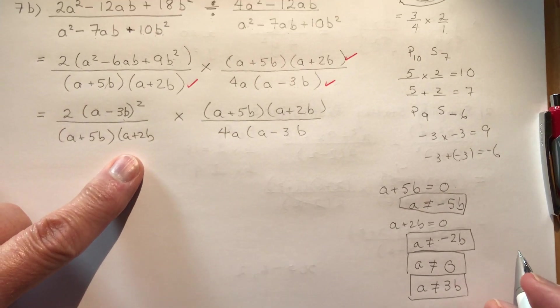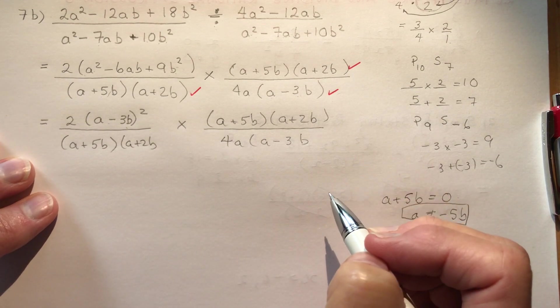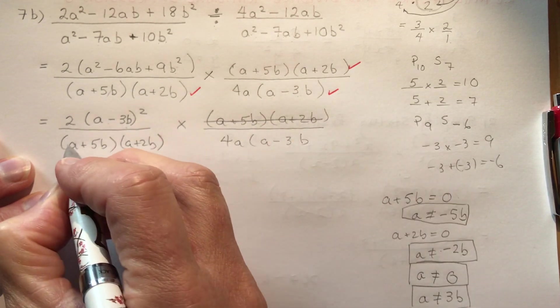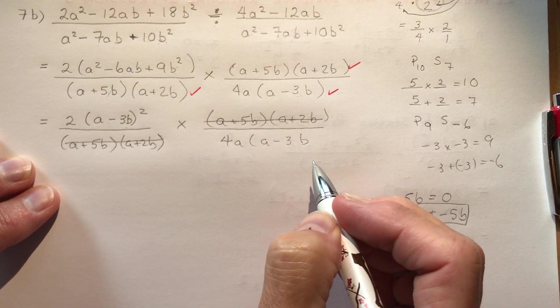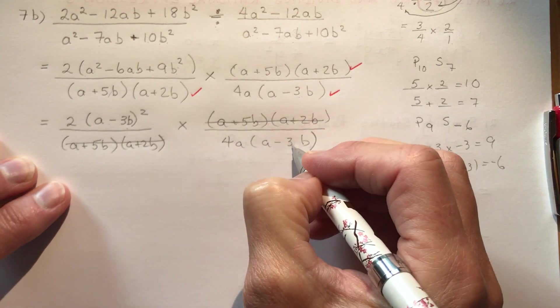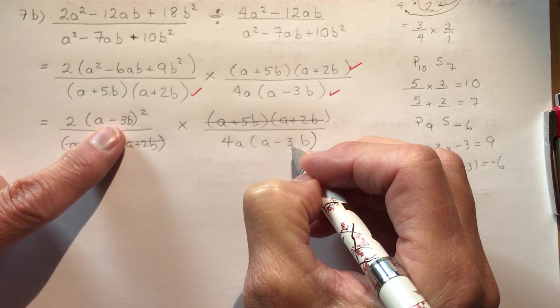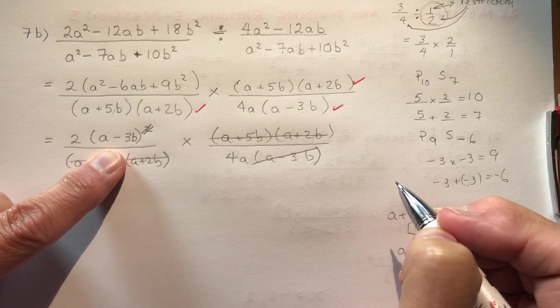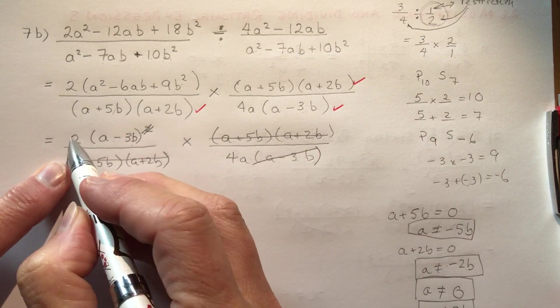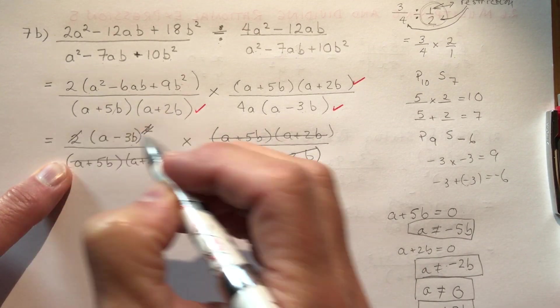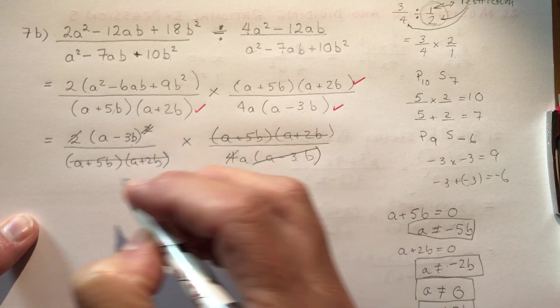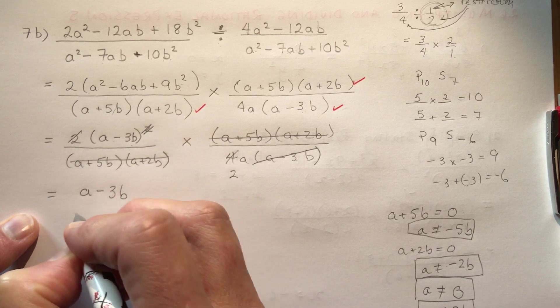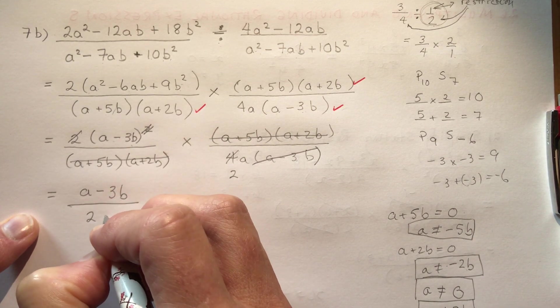So let's go back and finish this calculation here. We need to finish simplifying it. All of this goes off with all of this. They're the very same. I have an A minus 3B here, and I have two of them here. So this is going to get rid of one of those. So now I just have A minus 3B. And finally, this two can divide into the four. So two goes into four two times. So I'm left with A minus 3B in the numerator, and in the denominator, I have 2A.